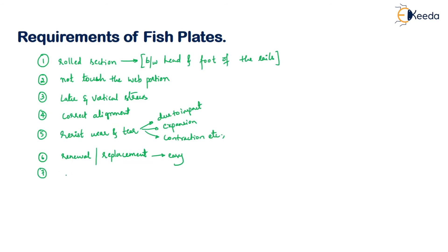The last requirement is the fish plate should be designed in such a way that the pair of fish plates provides strength to the rail in both ways. Both fish plates together have to provide strength to your rail, which is a crucial requirement.